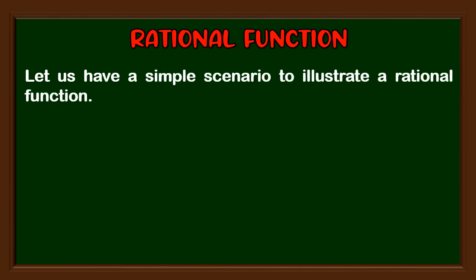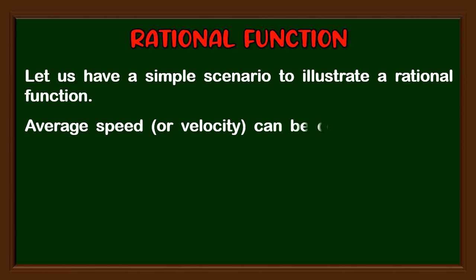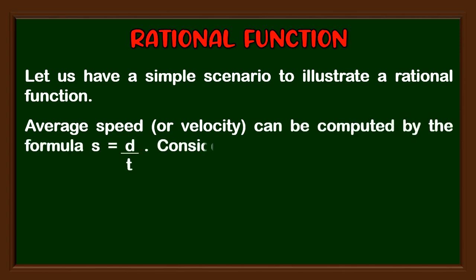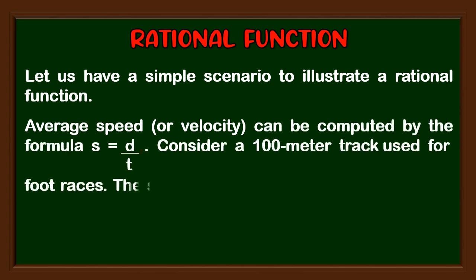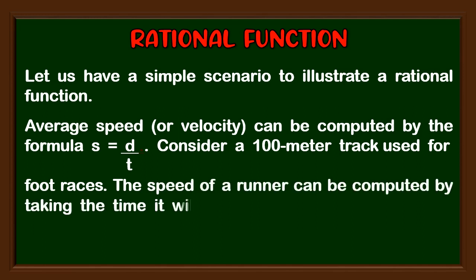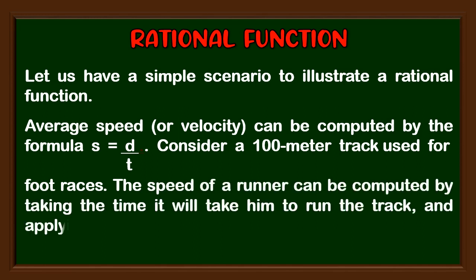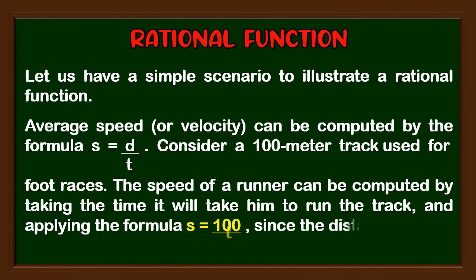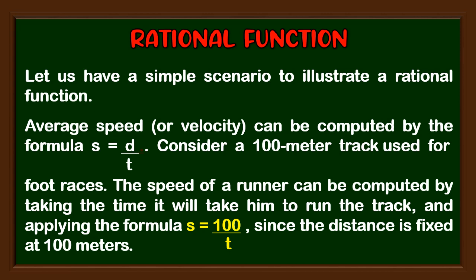Average speed or velocity can be computed by the formula s = d / t. Consider a 100-meter track used for foot races. The speed of a runner can be computed by taking the time it will take him to run the track and applying the formula s = 100 / t, since the distance is fixed at 100 meters.